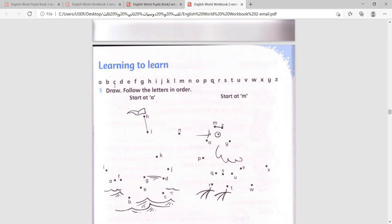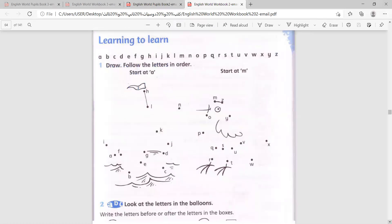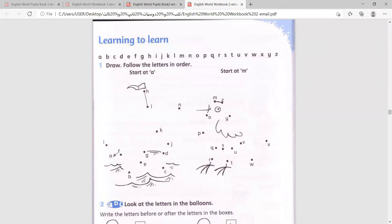Again, A, B, C, D, E, F, G, H, I, J, K, L, M, N, O, P, Q, R, S, T, U, V, W, X, Y, and Z. Here you have two drawings. Follow the letters in order. Here you will start from A and move until you finish the whole thing. A, B, C, D, E, F, G, and continue the rest of the drawing.